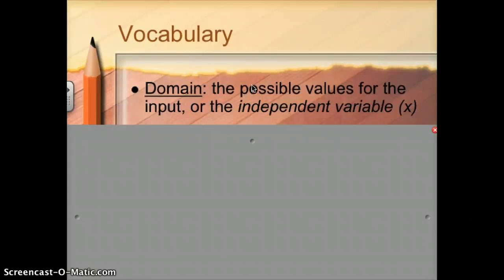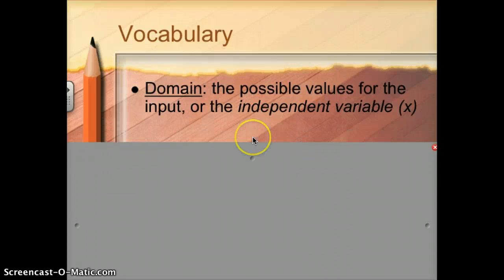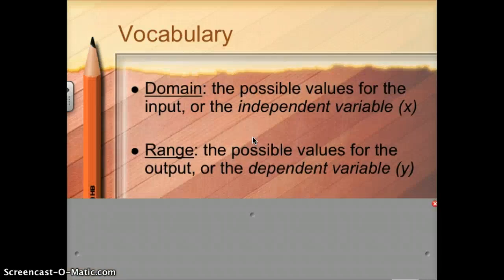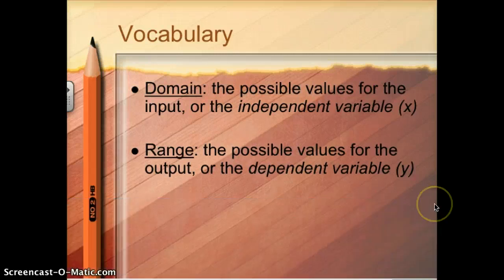Some vocab you're going to be responsible for knowing. Domain is all the possible values for the input, or the independent variable — also known as x — every value that x could possibly be. Range is all the possible values for the output, or the dependent variable — every quantity that y could be. We'll look at some examples to help you put that together.